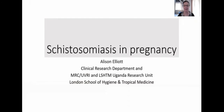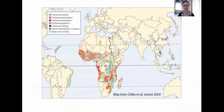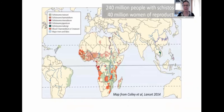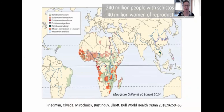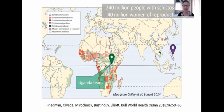Thank you very much for this opportunity to talk about schistosomiasis in pregnancy. Of 240 million people with schistosomiasis in the world, about 40 million are women of reproductive age. This presentation builds on a review undertaken together with Jennifer Friedman and others, and on work conducted by my team in Uganda and by Jennifer's team and colleagues in the Philippines.